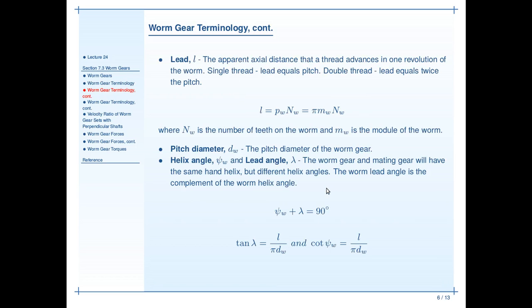When you look at these systems, there are going to be a couple of things, definition-wise, that we look at. We already looked at the axial pitch, P sub W. The lead is identified with L. N sub W is the number of teeth on the worm. And if you happen to have a metric system, M sub W is the module of the worm. The worm also has its own pitch diameter, labeled as D sub W. And then it has two angles that are associated with it. The helix angle, P sub W, and the lead angle, lambda.